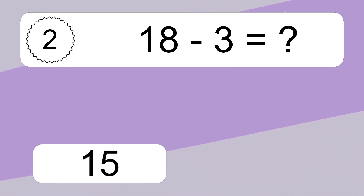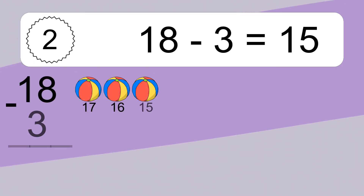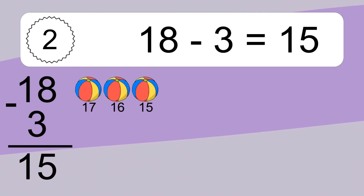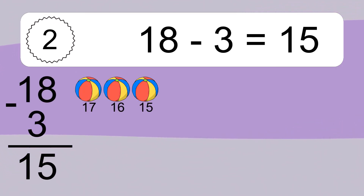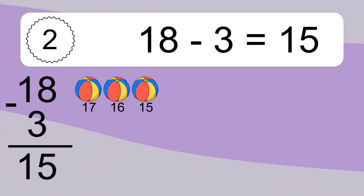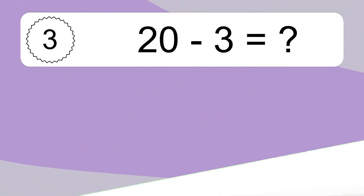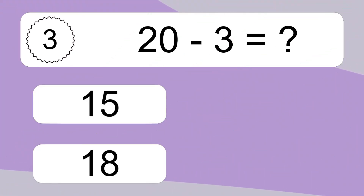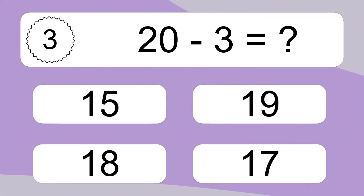18 minus 3 equals what? 18 minus 3 equals 15. Let's count it: 17, 16, 15.